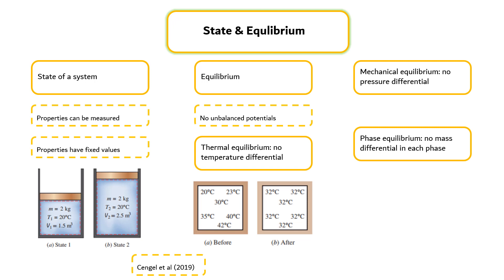Finally, a system is in chemical equilibrium if its chemical composition does not change with time. That is, no chemical reactions occur. A system will not be in equilibrium unless all the relevant equilibrium criteria are satisfied.